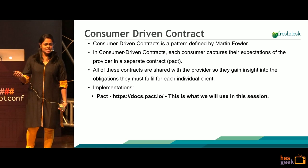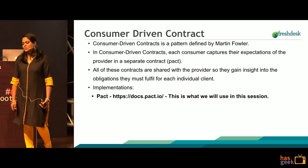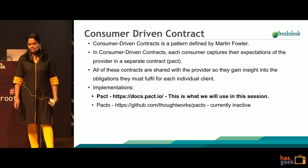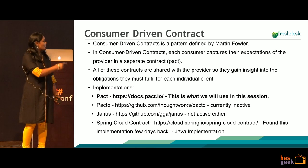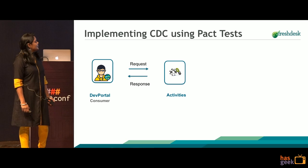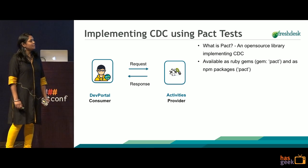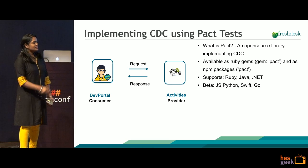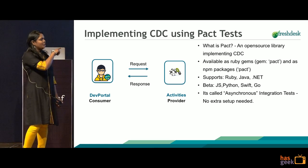There are various implementations of this concept — various tools which actually implement consumer-driven contracts. One such tool is Pact. Pact is an open source library available in various flavors of languages. There are other tools called Pacto, Janus, and Spring Cloud Contract as well. Spring Cloud is actually a Java implementation. We use the Ruby and NPM modules. Pact is actually used for asynchronous integration tests.